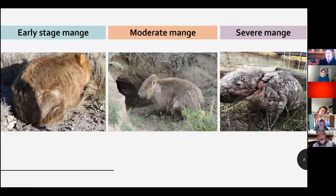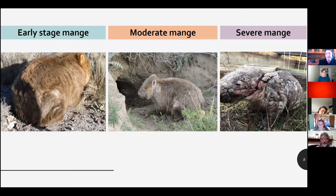This is a quick slide to show the progression of mange. Depending on season, temperature, food sources, and external stress factors, there's a lot impacting on progression. But mange could progress from early stage to severe within six months. During those six months, the wombat will experience never-ending pain, itching, sleeplessness, hunger, and suffering.